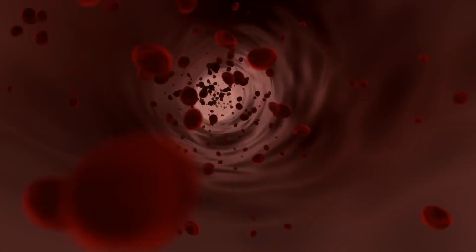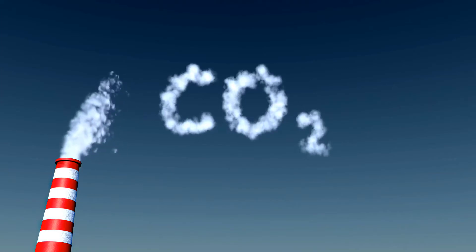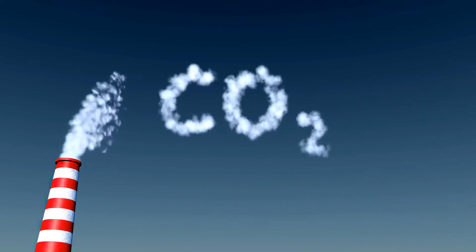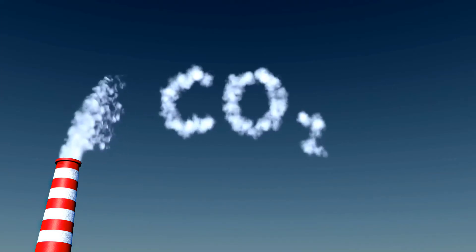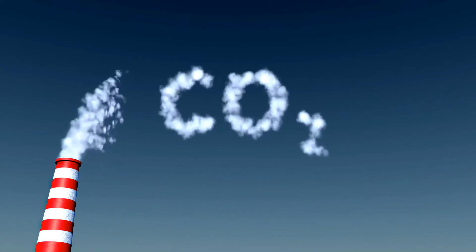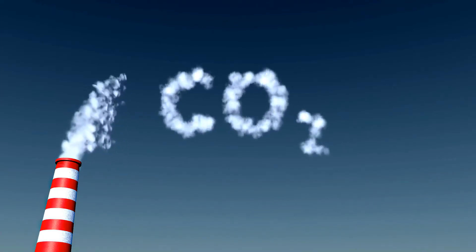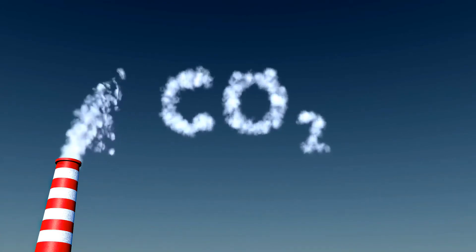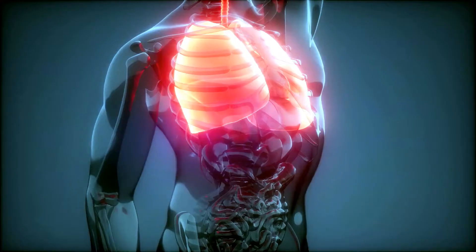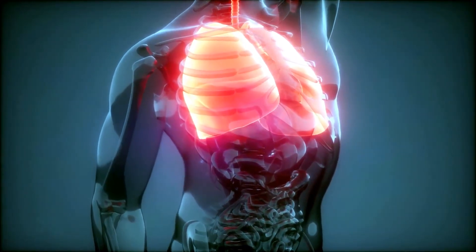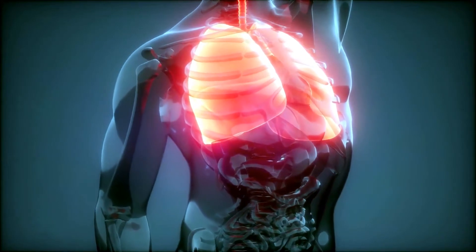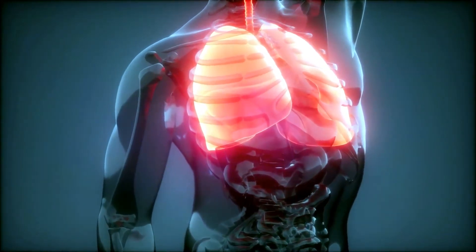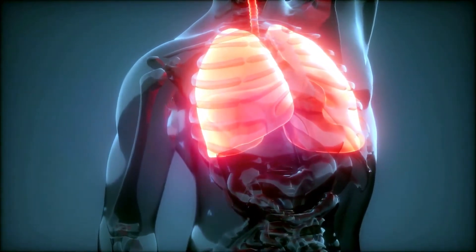Transport of carbon dioxide: after having transported the oxygen to the tissues, the red blood cells are able to collect the carbon dioxide thanks to an enzyme present on their surface, carbonic anhydrase. The carbon dioxide can thus be returned to the lungs, where it can then be evacuated from the body.